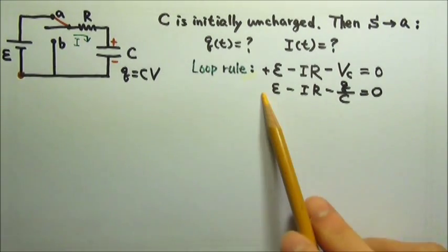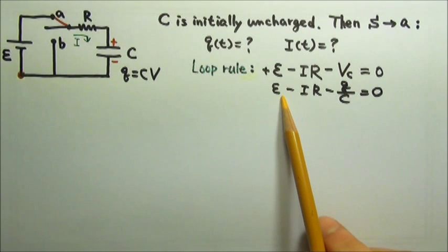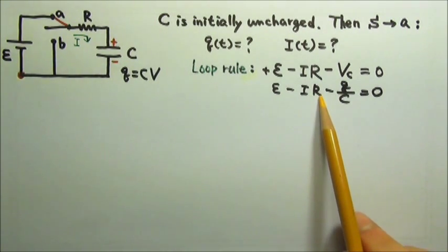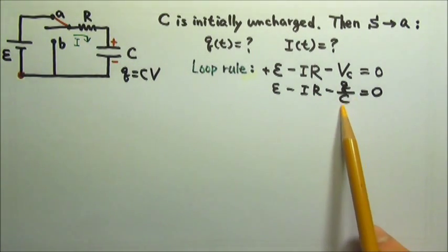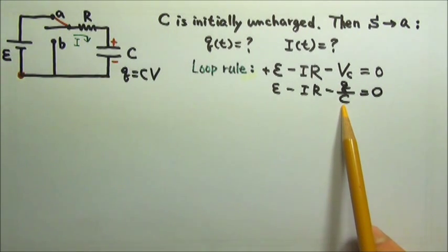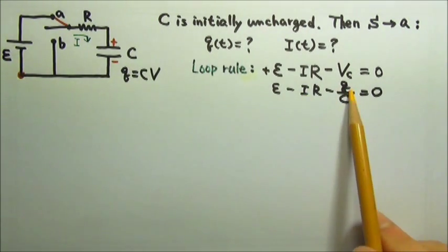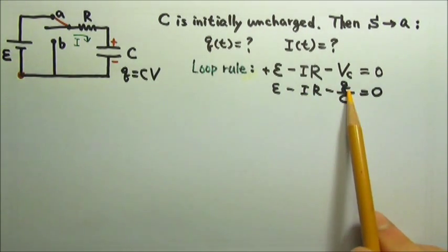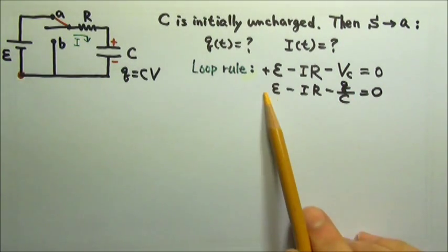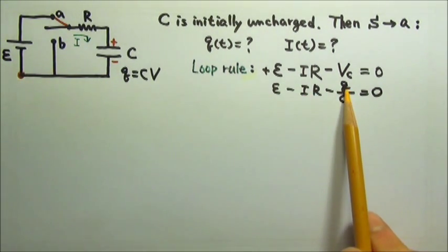For the capacitor, because Q equals CV, the voltage across the capacitor is Q over C. So our loop rule turns into this equation. In this equation, the EMF of the battery is a constant, the resistance is a constant, and the capacitance is a constant. But I and Q both change according to time, which means we have one equation but two unknowns.